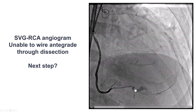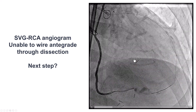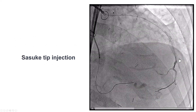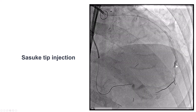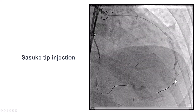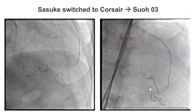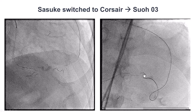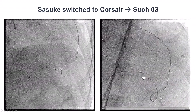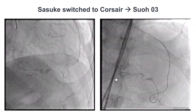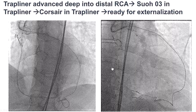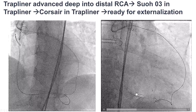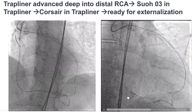So what to do? Acute vessel closure, unable to wire antegrade. Emergency bypass is an option, but with a prior bypass patient this would be hard on an emergent basis. We decided to try a potential retrograde approach. We did an injection through a Sasuke to visualize the collateral from the LAD into the RCA. There was a tortuous epicardial collateral. After changing to a SUO3 guide wire, we were able to advance the wire into the distal RCA close to the antegrade microcatheter. The SUO3 eventually crossed into the proximal true lumen. We then advanced an antegrade guide extension — a Trapliner — further distally, and were able to get the Corsair all the way into the Trapliner.